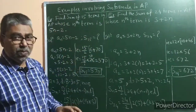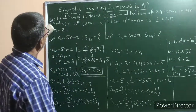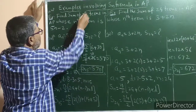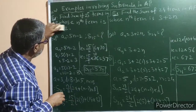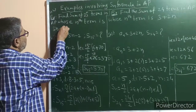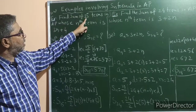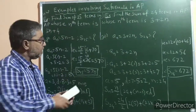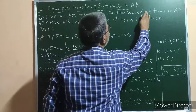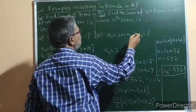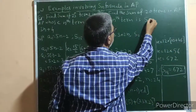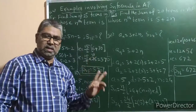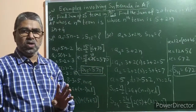Now I will give two homework examples for you to practice. First: find the sum of the first 25 terms of an AP whose nth term is 3n + 4. Second: find the sum of the first 20 terms of an AP whose nth term is 5 + 2n. Solve these two examples as homework.